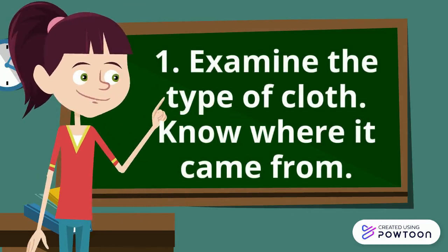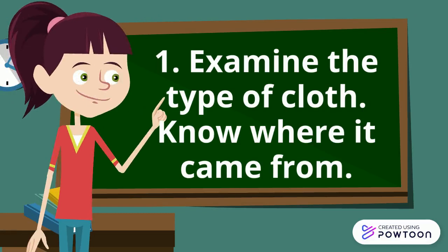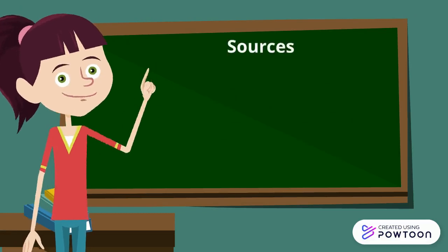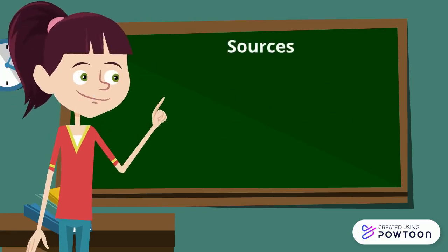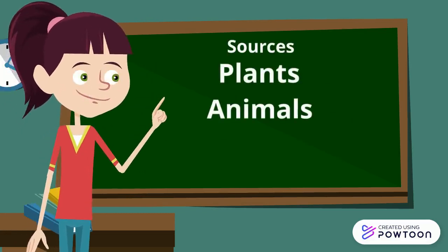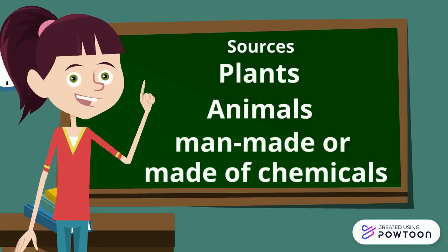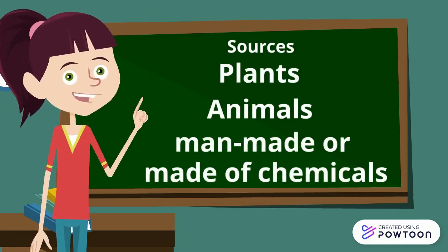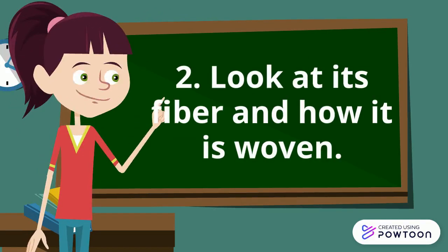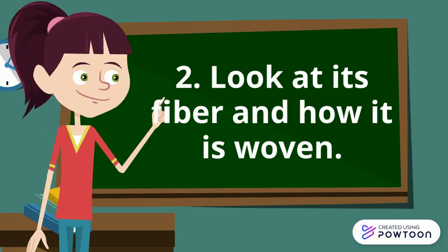1. Examine the type of cloth. Know where it came from. The clothing materials came from plants, animals, man-made or made of chemicals. 2. Look at its fiber and how it is woven.